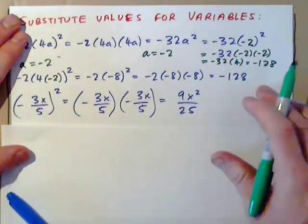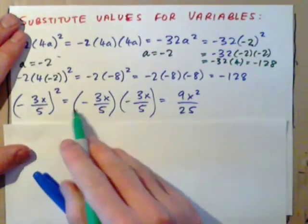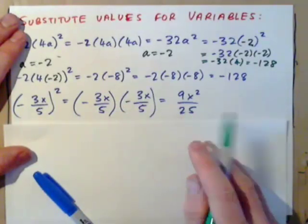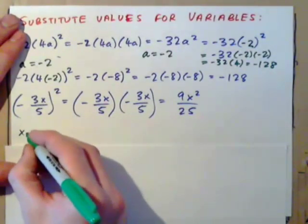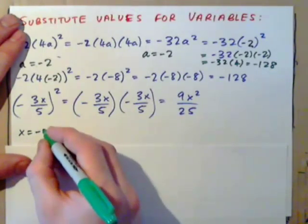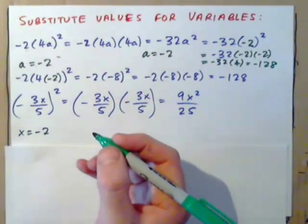If you had -3x over 5 all squared, that can be simplified to 9x² over 25. Now, if they told us that x was -2, for example,